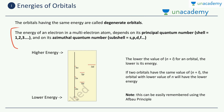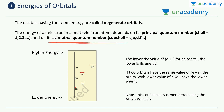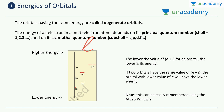The energy of an electron in a multi-electron atom depends both on its principal quantum number, which is the shell number (1, 2, 3, 4, 5 and so on), as well as its azimuthal quantum number, which is the subshell number — s, p, d, f — denoted by the letter l. These two numbers are the only ones you need to arrange all the orbitals in ascending order.